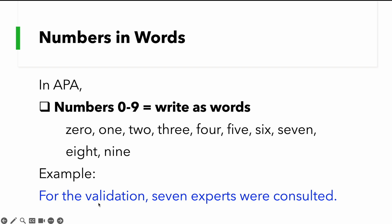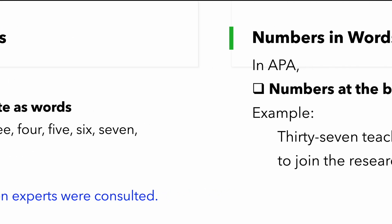Example, for the validation, 7 experts were consulted. It's the rule. If it is 9 below, we have to write as words. Quite easy to remember.